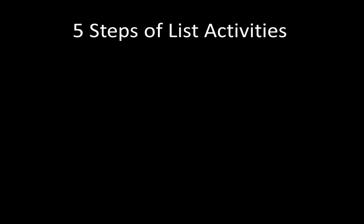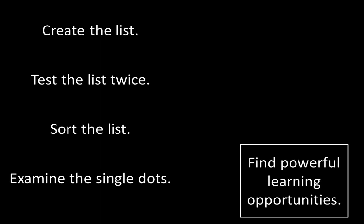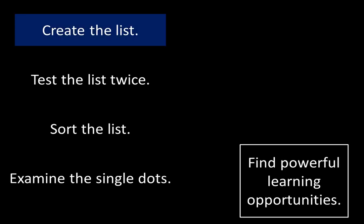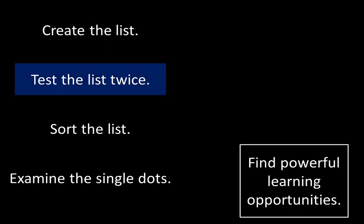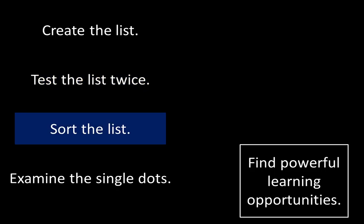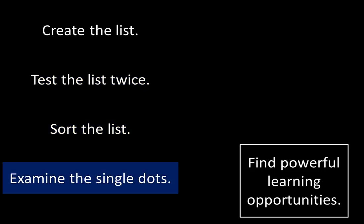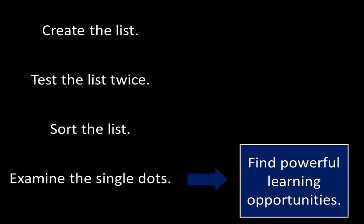In the last videos, we learned that there are five steps of list activities, and we took a closer look at those five steps. The steps are: create the list, test the list twice, sort the list, and examine the single dots in order to find powerful learning opportunities.